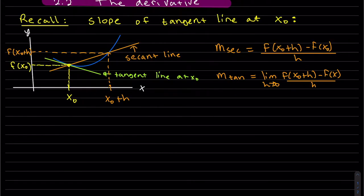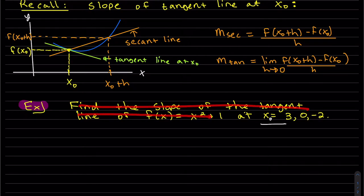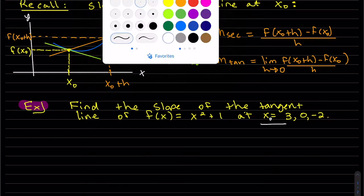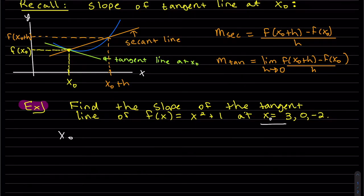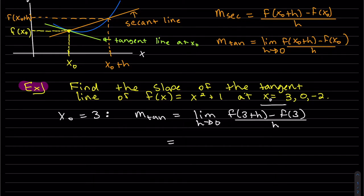Quick example: we want to find the slope of the tangent line of f(x) = x² + 1 at three points. We'll start with x naught equals three. The slope of the tangent at that point is the limit, with x naught equal to three placed into the formula.